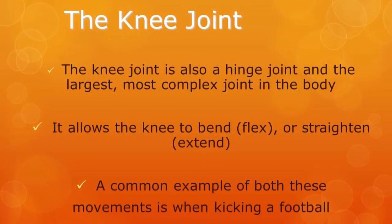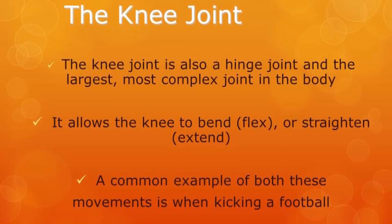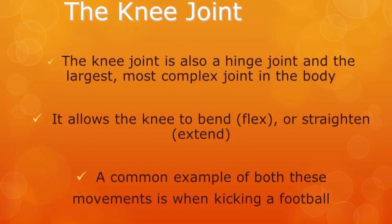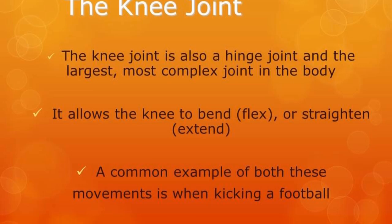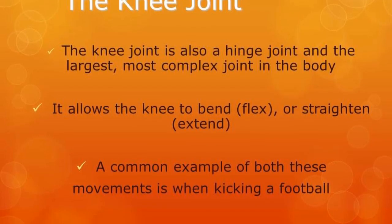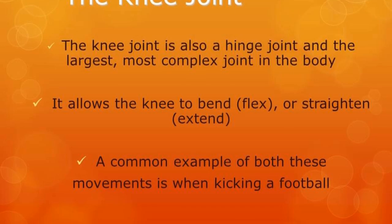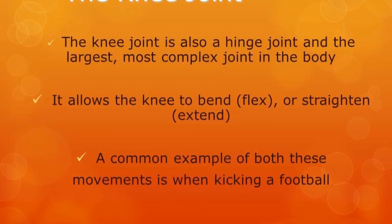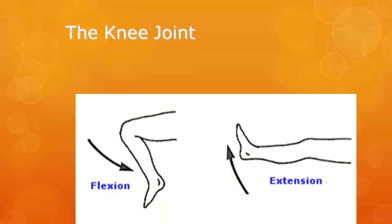At the knee joint there can sometimes be a little bit of rotation, but not too much. This is mainly because the tibia — the top of the shin bone — and your femur, the thigh bone, are slightly rounded. In between is the cartilage, which stops them rubbing together. The joint is held together by ligaments called cruciate ligaments, which tie across.